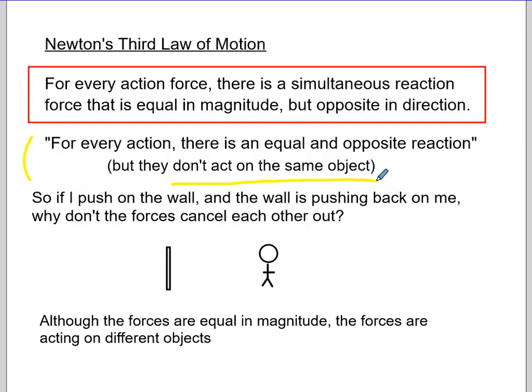For every action, there is an equal and opposite reaction, but they don't act on the same object. That's a really important idea. So if you can imagine, I'm going to go push on the wall. So if I push on the wall and the wall is pushing back on me, why don't the forces cancel each other out? Well, here's me pushing on the wall, but the wall pushes back on me. So now I have two forces. They're equal in magnitude. They're opposite in direction, but they're not acting on the same object. So that's the big reason why the forces just don't cancel out.